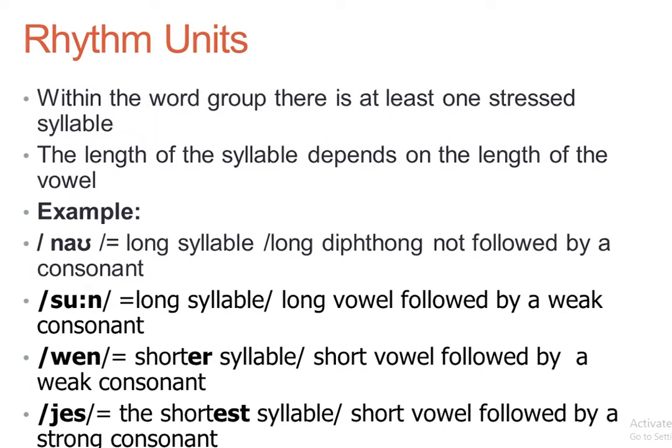Here we have a new topic: the rhythm unit. Within the word group there is at least one stressed syllable. A word group is a group of words that go together and are separated from other word groups by pauses — either short pauses within the utterance or long pauses.